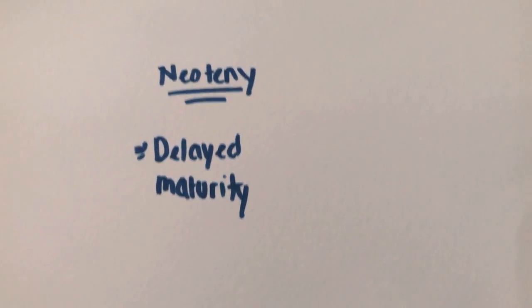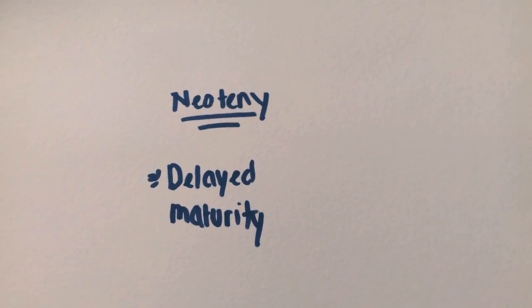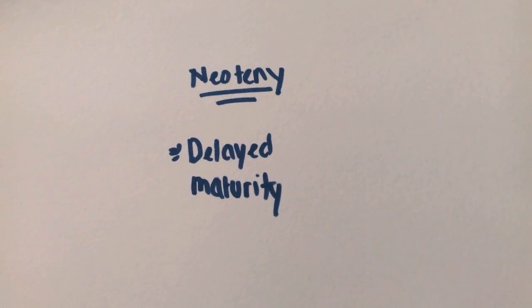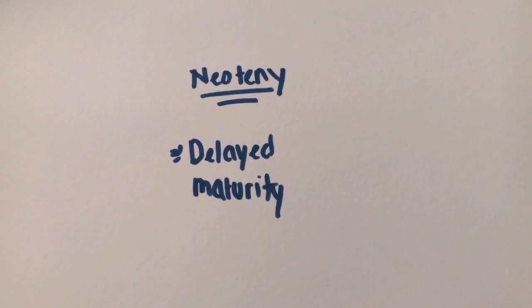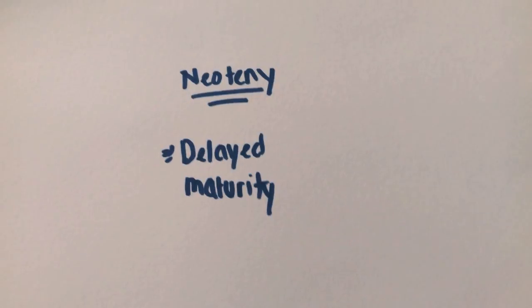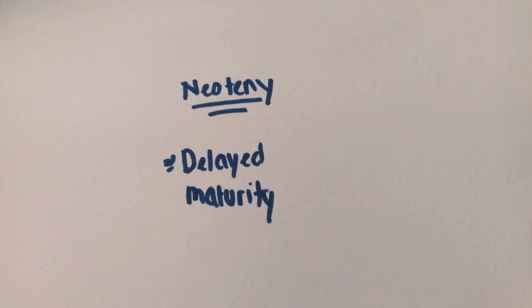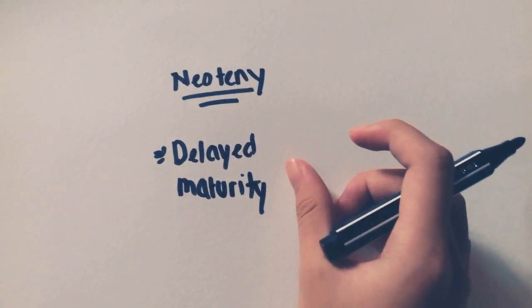Hello everyone, my name is Vanessa. I'm from Sunny Hill Secondary School and I'm in Form 2. So here I'm going to talk about a little topic called neoteny. Now what is neoteny? A short definition of neoteny is delayed maturity.